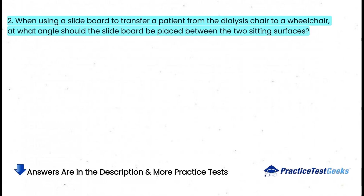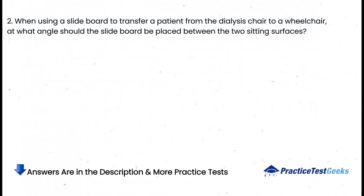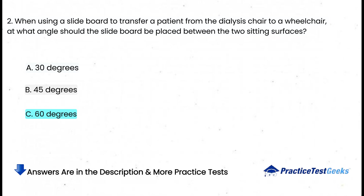When using a slide board to transfer a patient from the dialysis chair to a wheelchair, at what angle should the slide board be placed between the two sitting surfaces? a. 30 degrees, b. 45 degrees, c. 60 degrees, d. 90 degrees.